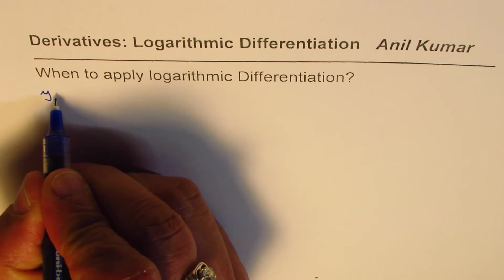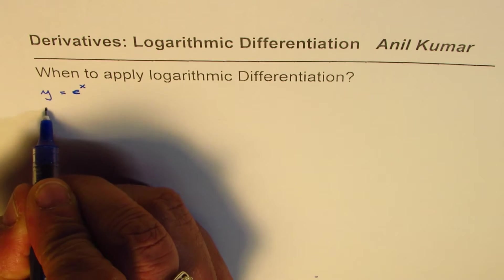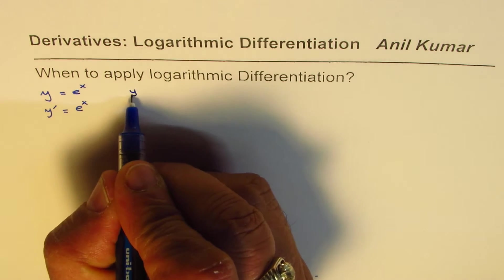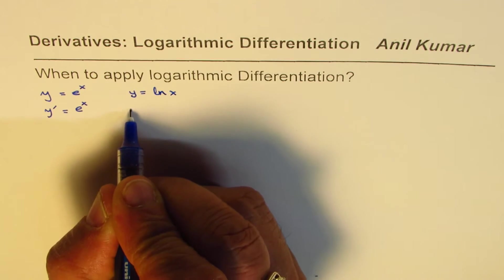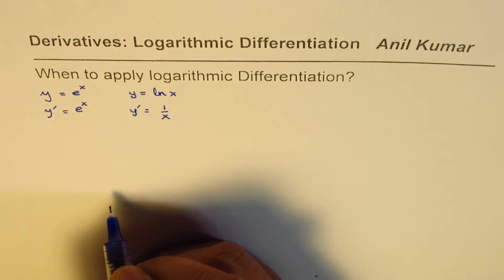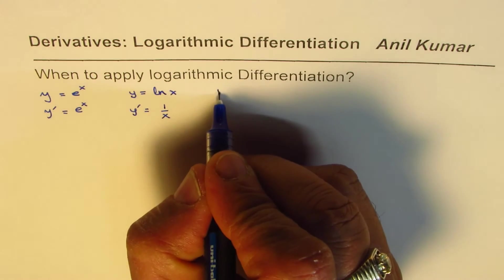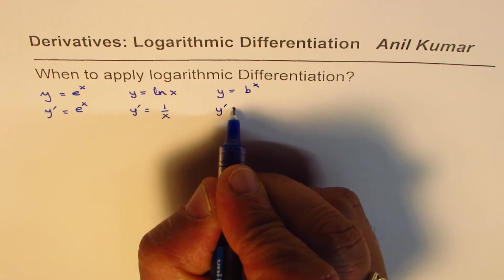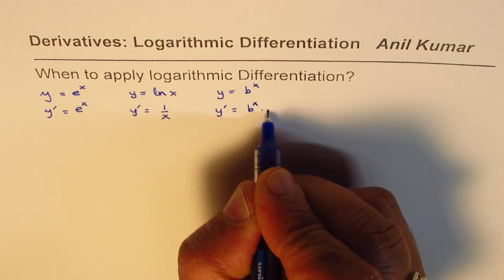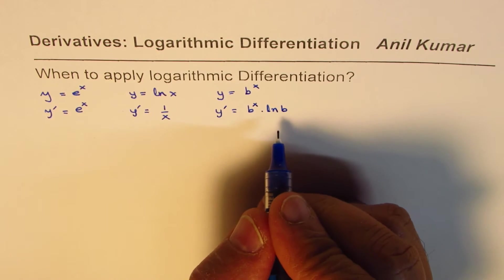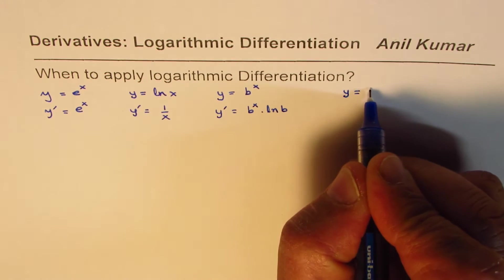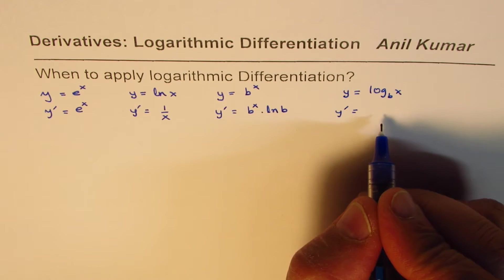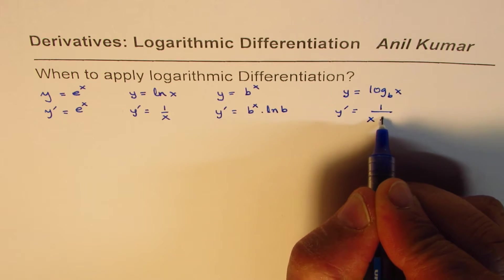If we have a function y equals e to the power of x, then the derivative y dash is the same function e to the power of x. If you have a function y equals ln x, the derivative is 1 over x. If you have y equals b to the power of x, where b is a constant, the derivative is b to the power of x times ln b. And if you have y equals log base b of x, the derivative is 1 over x ln b.